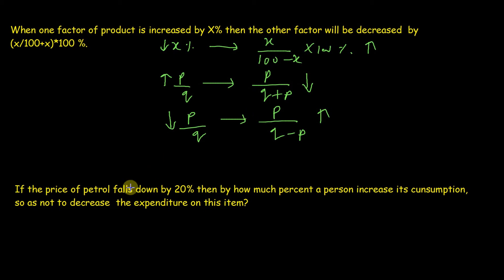Let's apply this conclusion to the given question. The question is: if the price of petrol falls down by 20%, then by how much percent a person should increase its consumption so as not to decrease the expenditure on this item? We know consumption multiply by price is equal to expenditure, and we want expenditure to be constant.